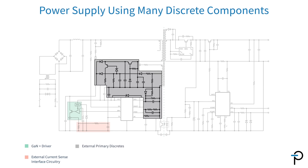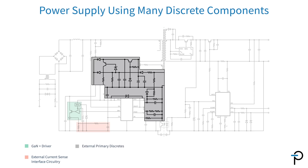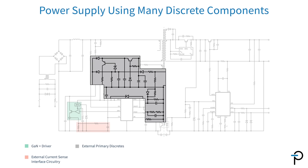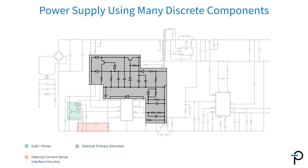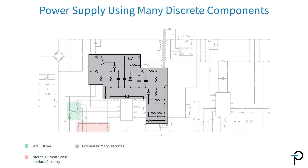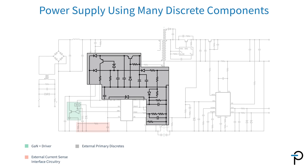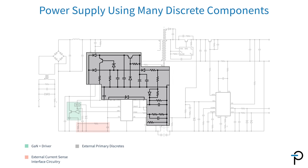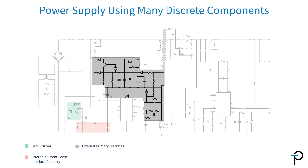Another thing worth taking a look at is the amount of bias circuitry that's required. This is because the power supply itself needs to operate over a wide dynamic range, and that means the power supply for the controller chip needs to be conditioned within the acceptable limits of the controller.